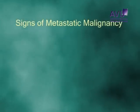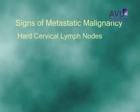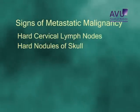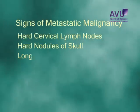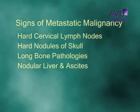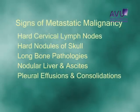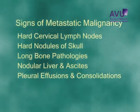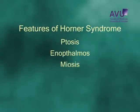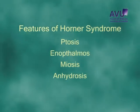If carcinoma is suspected, look for signs of metastatic malignancy. Note any enlarged lymph nodes with hard consistency. Palpate the entire skull for hard bony nodules, which is associated with follicular carcinoma. Look for any bone deformity or tenderness over long bones. Palpate the liver for any firm nodules and percuss the abdomen for free fluid. Percuss and auscultate over the lungs for signs of effusion and consolidation. If any of these are present, metastatic malignancy is highly suggested.